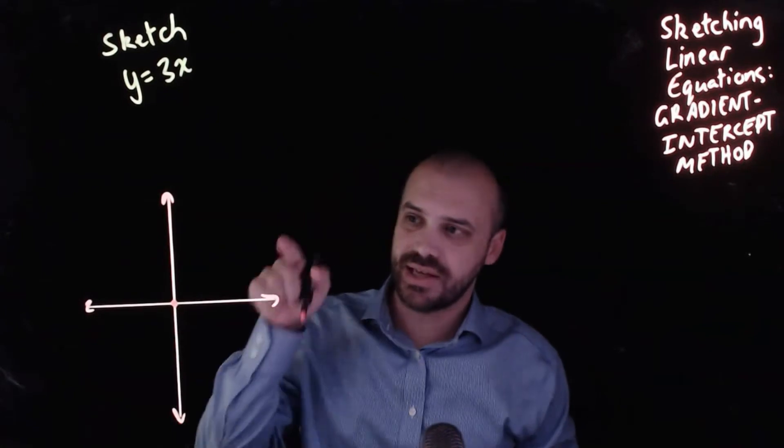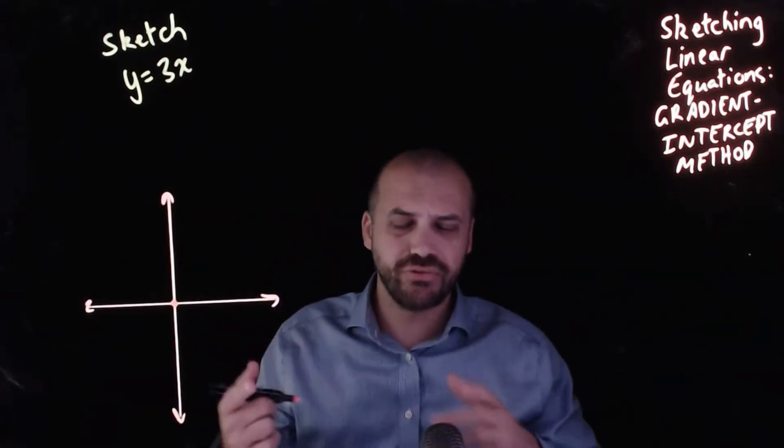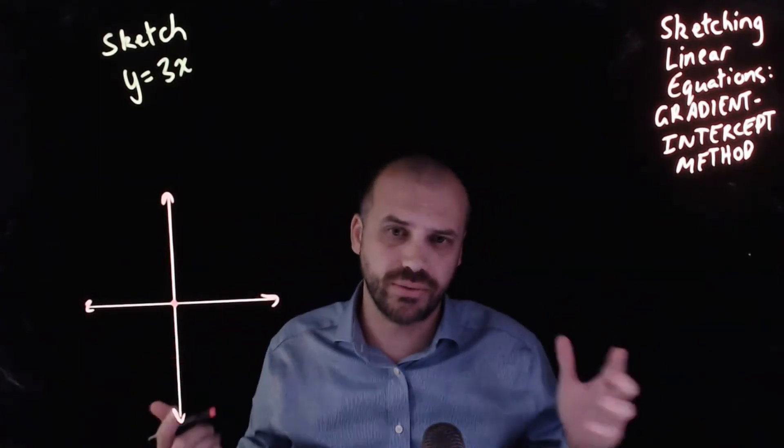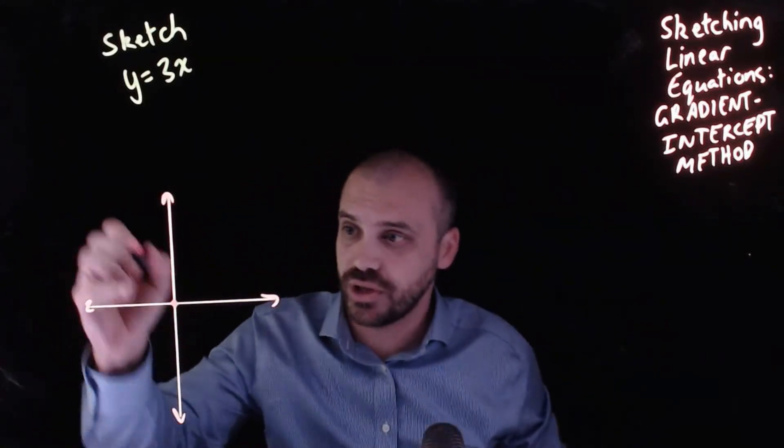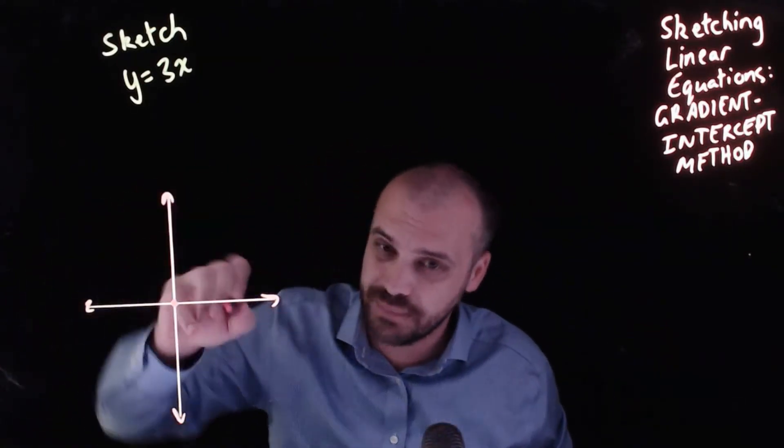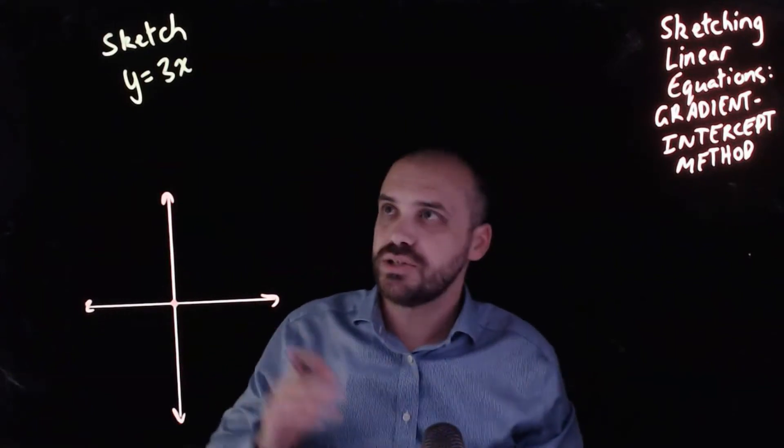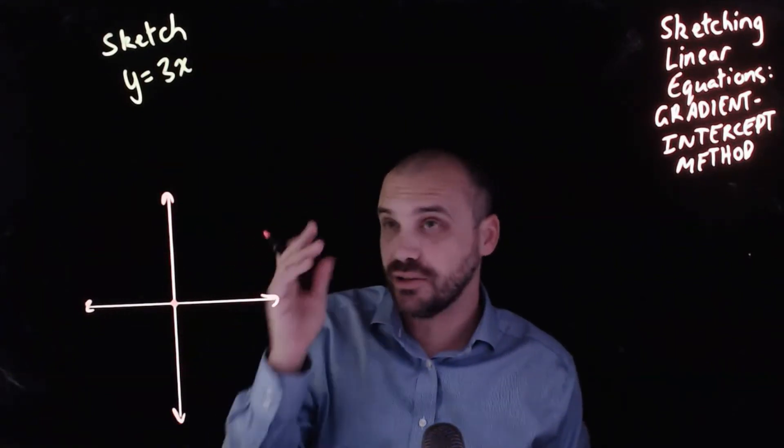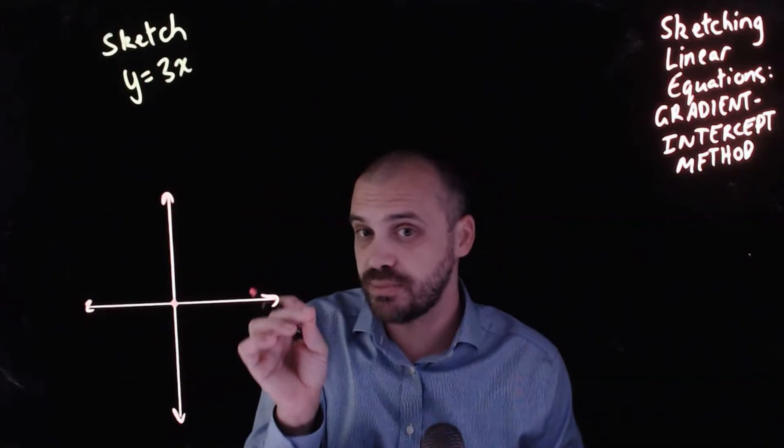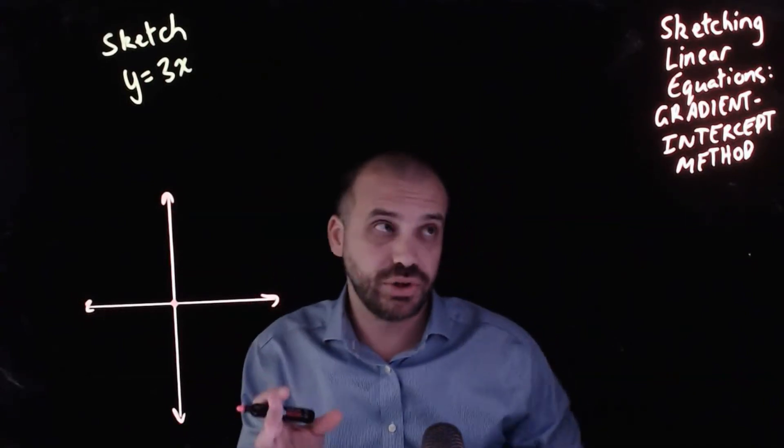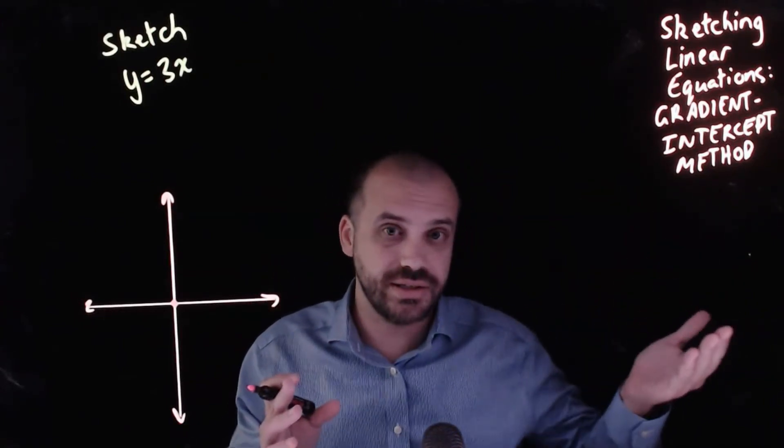So what I have is a single point. And you can't draw a line through a single point. Or you can draw an infinite number of lines through that single point. Absolutely anything would do. So if you have a line with a y intercept of 0, your only choice is to use the gradient intercept method.